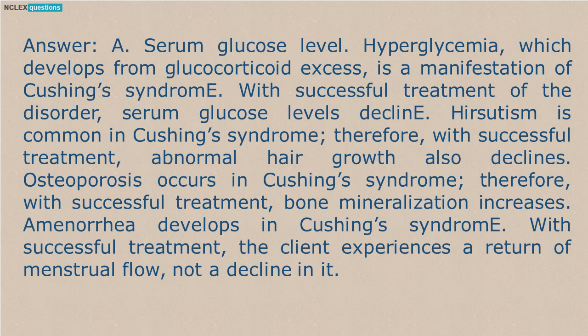Answer: A. Serum glucose level. Hyperglycemia, which develops from glucocorticoid excess, is a manifestation of Cushing's Syndrome. With successful treatment of the disorder, serum glucose levels decline. Hirsutism is common in Cushing's Syndrome; therefore, with successful treatment, abnormal hair growth also declines. Osteoporosis occurs in Cushing's Syndrome; therefore, with successful treatment, bone mineralization increases. Amenorrhea develops in Cushing's Syndrome. With successful treatment, the client experiences a return of menstrual flow, not a decline in it.